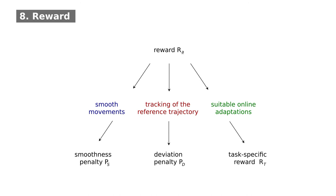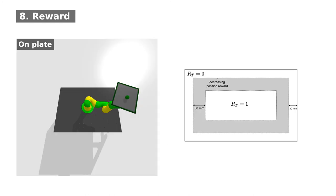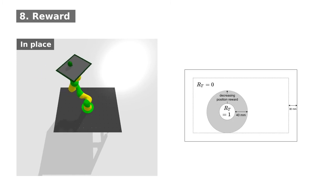The two versions of our ball-on-plate task, shown before, differ only with respect to the task-specific reward. If the ball is allowed to be balanced in the whole plate, the reward is decreased near the margin of the plate only. In contrast, the reward of our in-place version is reduced as soon as the ball leaves its initial position.